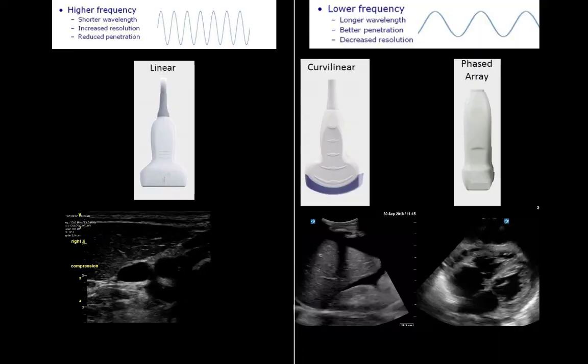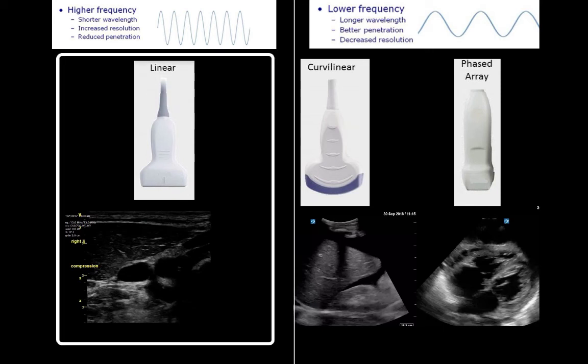This leads right into probes. Most people do not understand these key properties but do understand how the probe works — but now you are much more informed. A higher-frequency linear probe is great for vascular access but can also work for lungs, nerves, and even the chest and abdomen when fluid enables sound wave propagation.